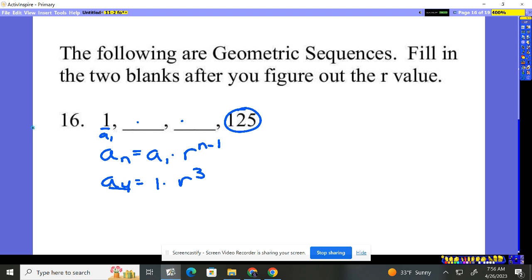We also know a4's value. What is it? 125. So, we have 125 is equal to 1 times r to the third. We can solve for r now and figure out the rate.